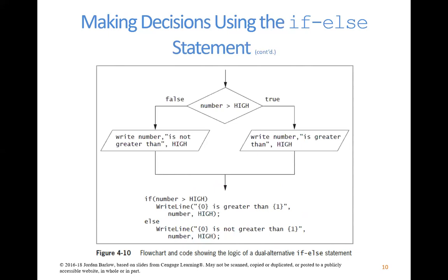Here's another example of using a flowchart and converting it into an if-else statement. If the value in the variable named number is higher than the value in the variable named high, then you write 'the number is greater than'; if it's not, you write 'the number is not greater than.' In the code, what happens if it's true comes directly after the if control statement, and what happens if it's false comes directly after the else keyword.